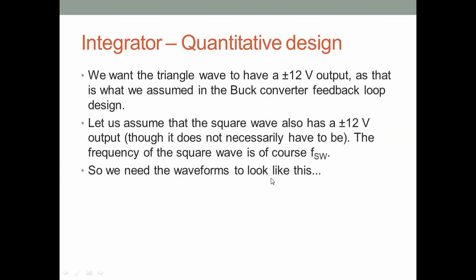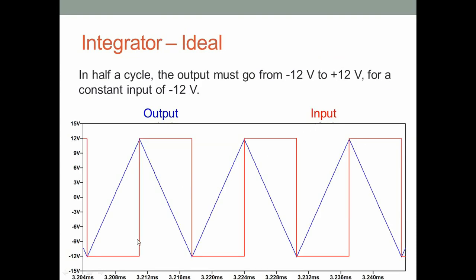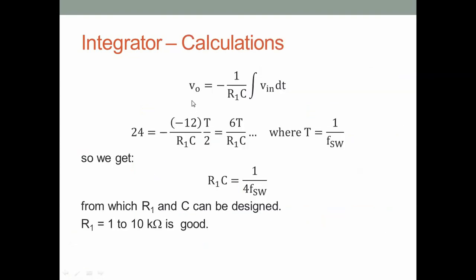The waveforms we expect ideally are as follows: the red trace is the input square wave going from +12 to −12 V. When the input is −12 V we want the output to increase from −12 to +12 V, and when the input is positive the output goes from +12 to −12 V. So this is ideally what we want the integrator output to be.